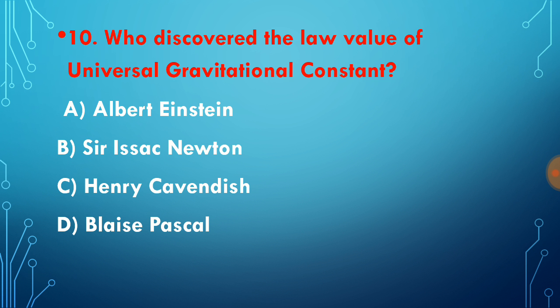Who discovered the value of universal gravitational constant? The value of universal gravitational constant was given by Henry Cavendish. Sir Isaac Newton gave the formula F = G m1 m2 / d^2. Later on, Henry Cavendish worked on the value of capital G and he gave the value of capital G. Henry Cavendish also discovered hydrogen gas.